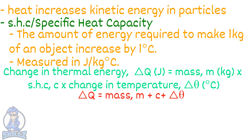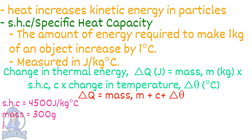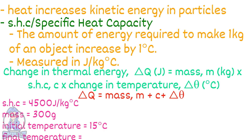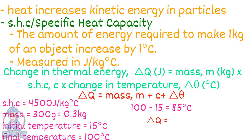The specific heat capacity of water is 4200 joules per kilogram degree Celsius. If the mass was 300 grams with a starting temperature of 15 degrees Celsius, firstly you must convert the grams into kilograms. The boiling point is 100 degrees Celsius, so the change in temperature would be 85 degrees Celsius. Then, if we substitute and multiply all our values, we get 107,100 joules as our answer.